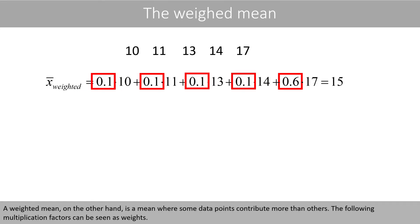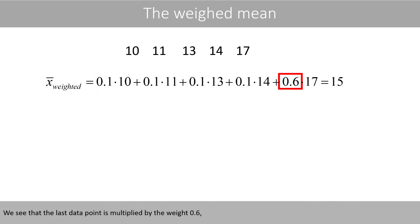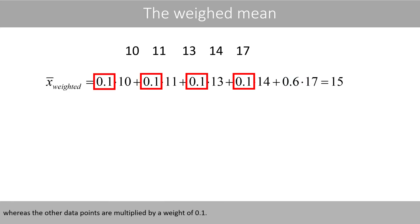A weighted mean, on the other hand, is a mean where some data points contribute more than others. The following multiplication factors can be seen as weights. We see that the last data point is multiplied by the weight 0.6, whereas the other data points are multiplied by a weight of 0.1.